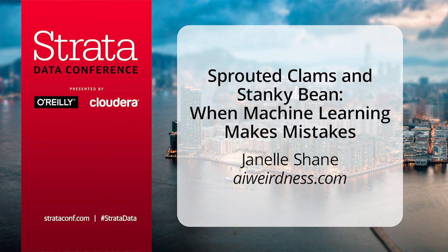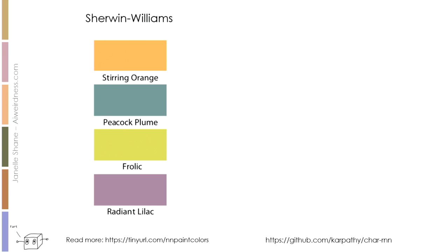Here's one of the experiments I did recently for my blog. I gave a recurrent neural network — a character-level recurrent neural network — a list of paint colors, about 7,000 colors from Sherwin-Williams, and I asked it to generate some more like that.